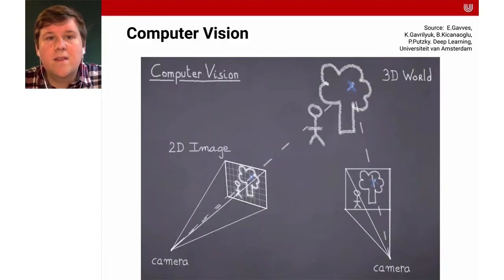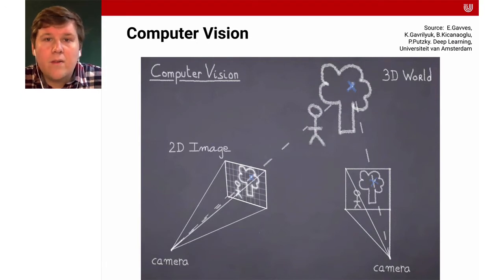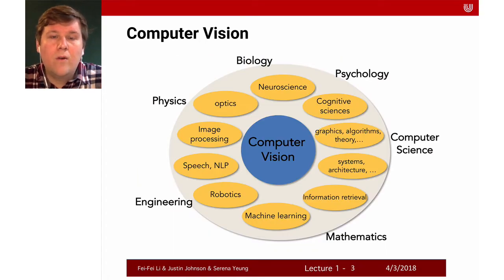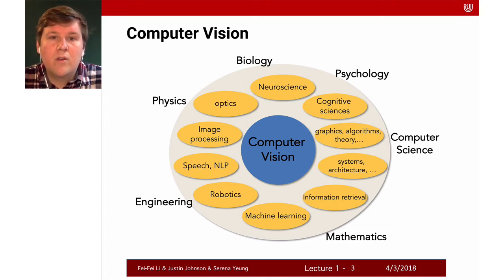What's really challenging about computer vision is that we live in a 3D world, but our cameras only ever capture a 2D representation of that 3D world. Overall, computer vision is a very interdisciplinary field. You have people working on machine learning, cognitive sciences, psychology, biology and neuroscience, but also physics such as optics, and engineering such as robotics.